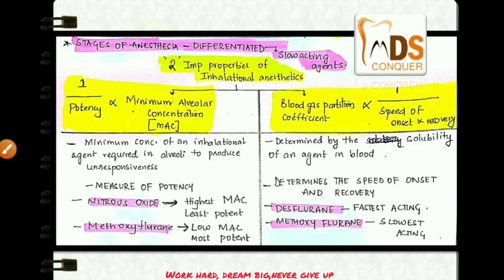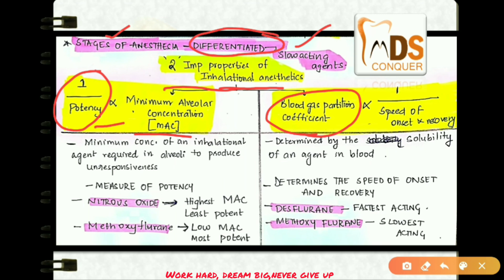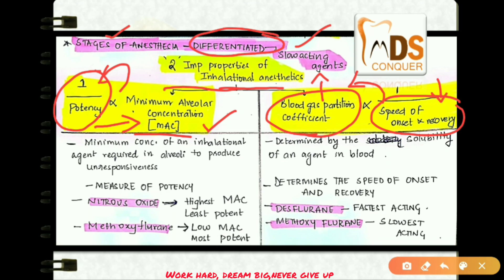The stages of anesthesia can be differentiated only when slow-acting agents are used. Inhalational anesthetics have two important properties: minimum alveolar concentration (MAC) and blood-gas partition coefficient. The potency of a drug is inversely proportional to its MAC, and the speed of onset and recovery is inversely proportional to the blood-gas partition coefficient. If MAC is high, potency is low; if the blood-gas partition coefficient is high, speed of onset and recovery is low.